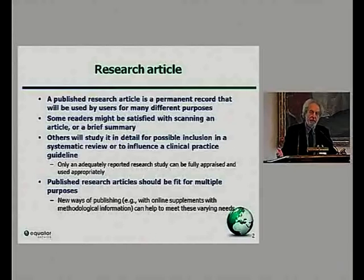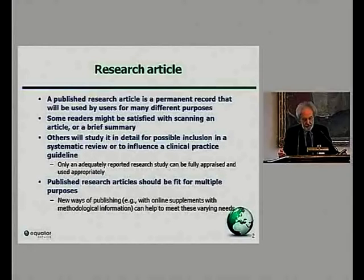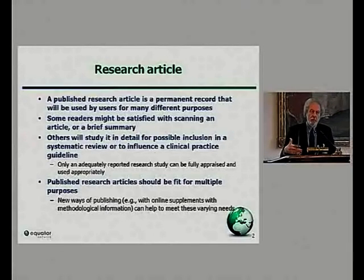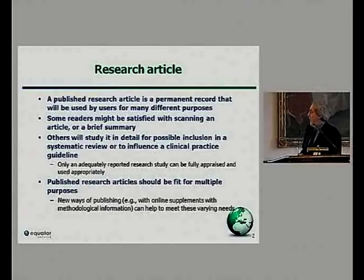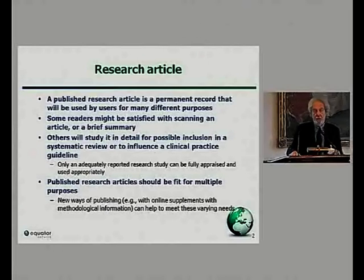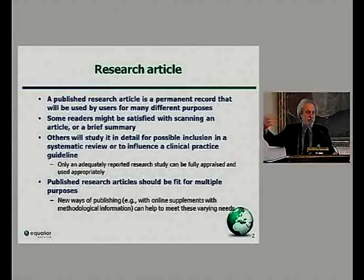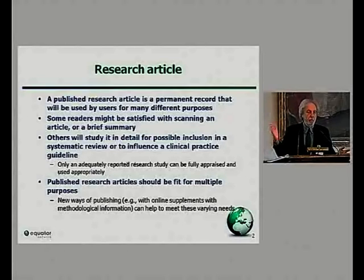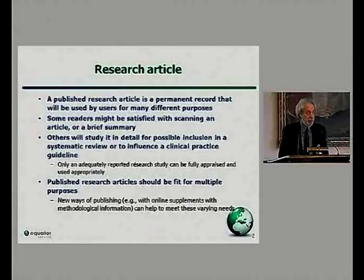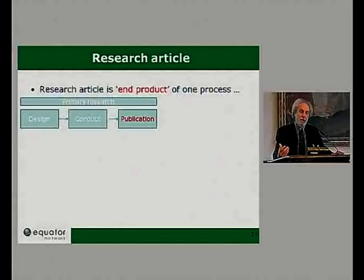Only a fully and adequately reported research article can fulfill everybody's needs, and the challenge is how we meet those needs. Currently much of the research literature isn't adequate, but one way we can go forward — and it's incredibly easy these days — is using online web appendices to include a lot of technical information that most readers don't want but which absolutely should be in the public domain as part of the publication record.